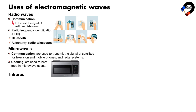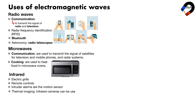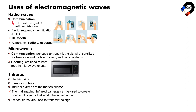Infrared is emitted by warm objects. Electric grills: some electric grills use infrared heat to cook food. Remote controls: remote controls use infrared light to send signals to devices such as TVs. Intruder alarms: intruder alarms use infrared as motion sensors. Thermal imaging: infrared cameras can be used to create images of objects that emit infrared radiation, used for medical imaging, security, and industrial applications. Optical fibers are used to transmit signals in communications more efficiently than visible light.